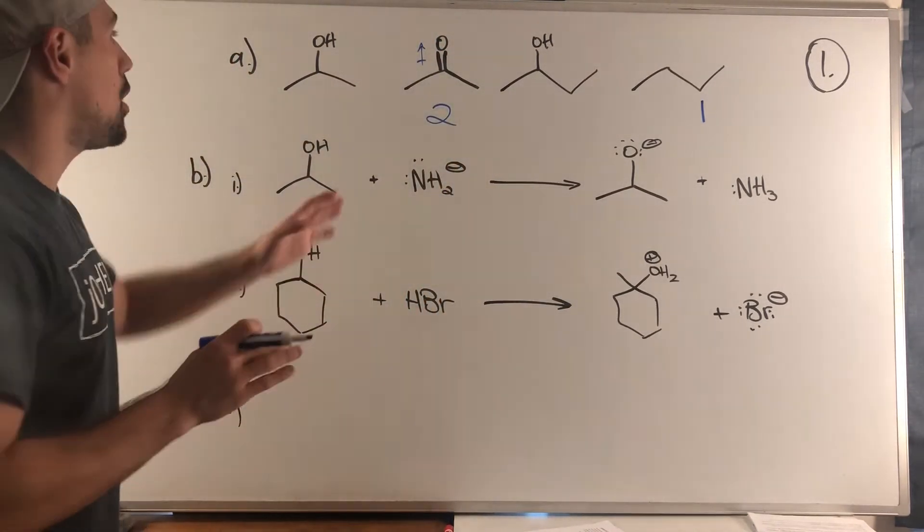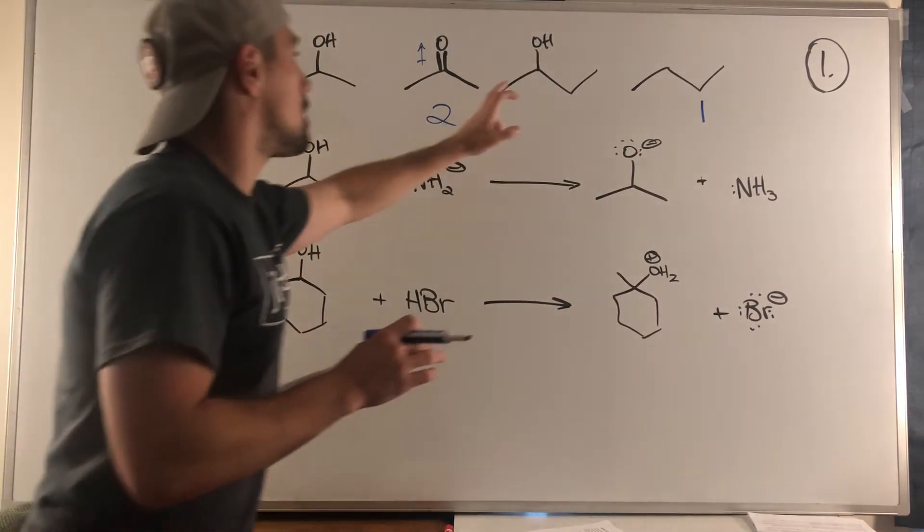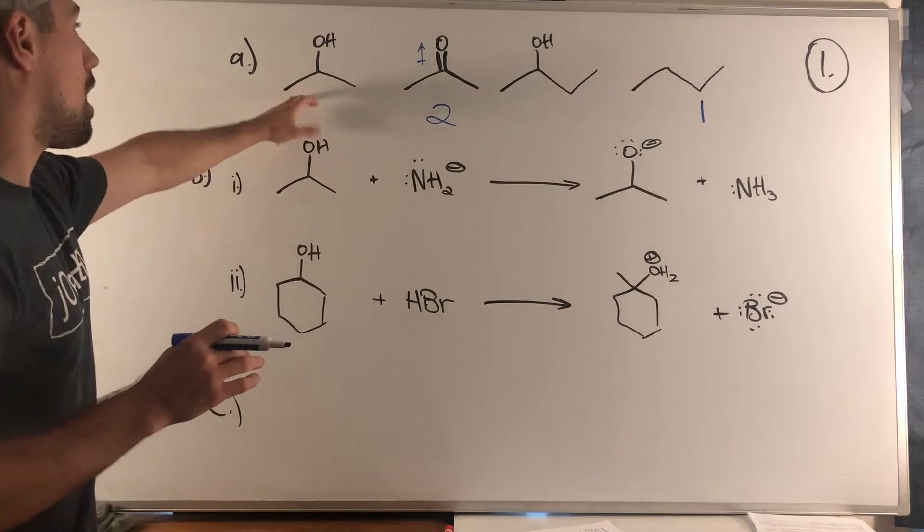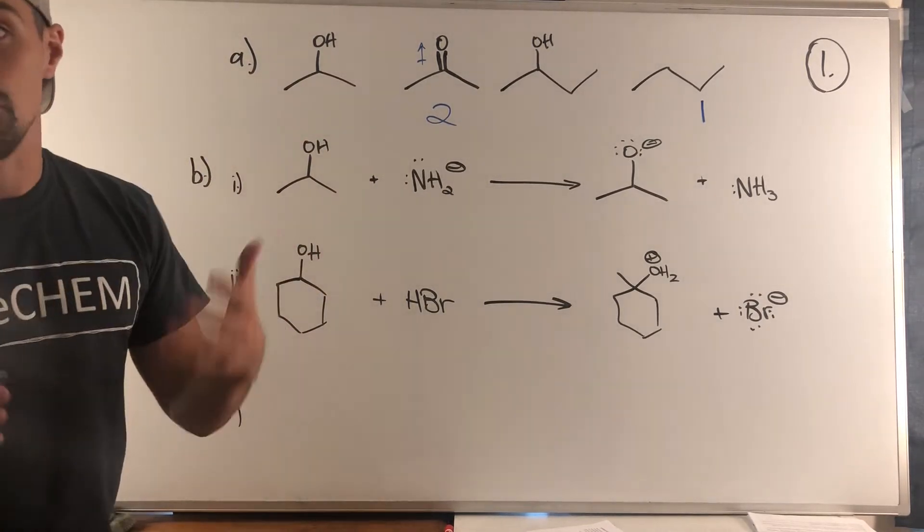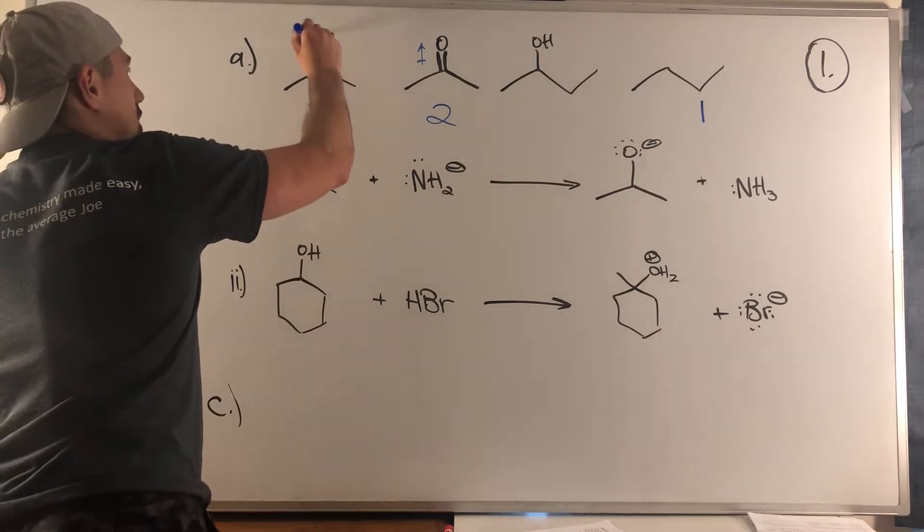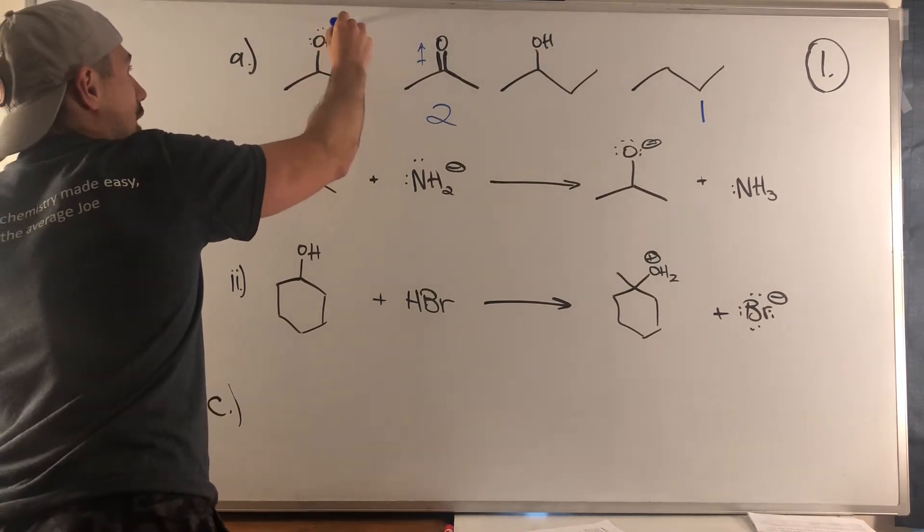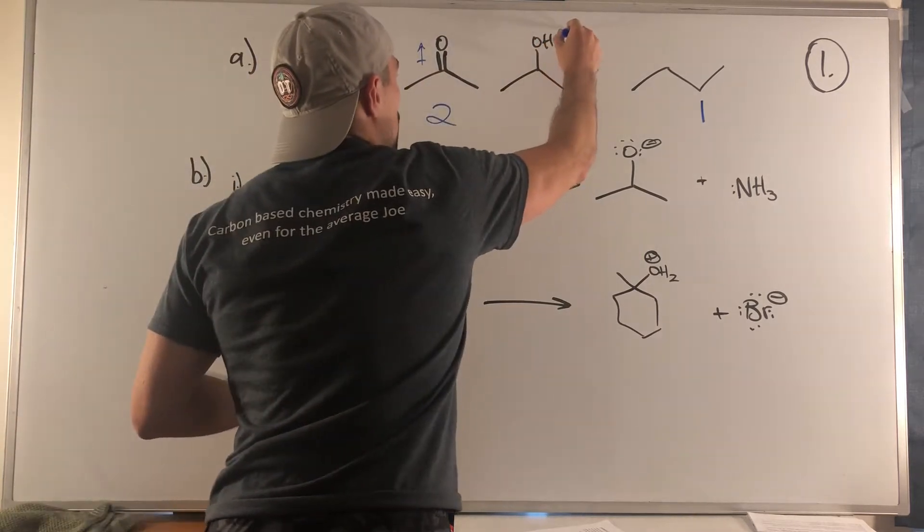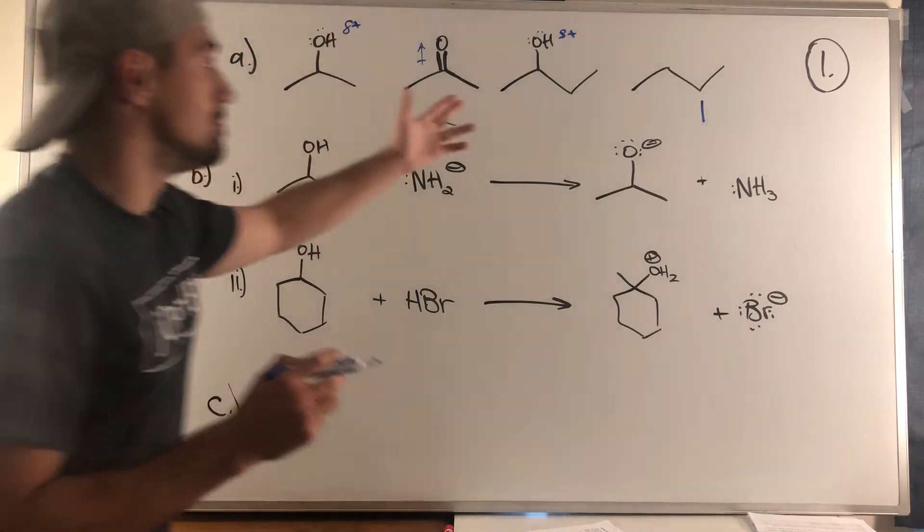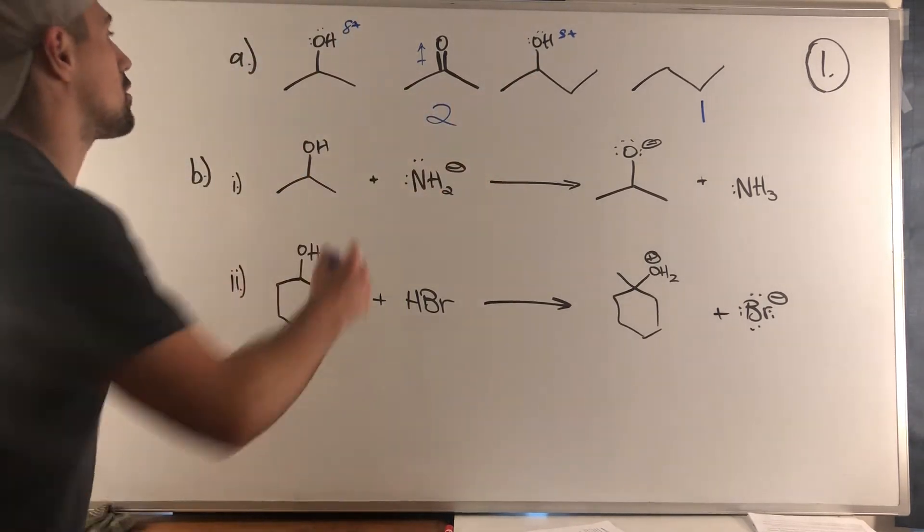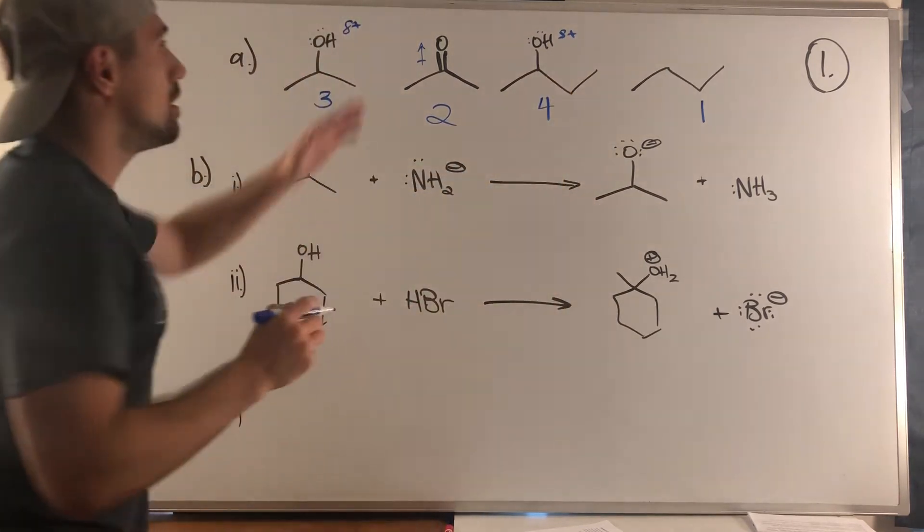Sec-butyl alcohol and isopropanol both can hydrogen bond in the same way. They have the hydrogen bonding sites at the two lone pairs on oxygen and at the hydrogen itself, so three locations for hydrogen bonding. However, sec-butyl alcohol is a little bit heavier, so three for isopropanol and four for sec-butyl alcohol.